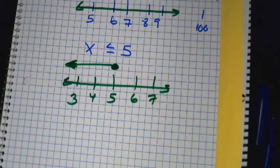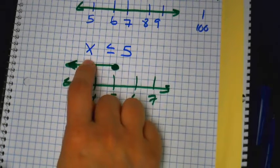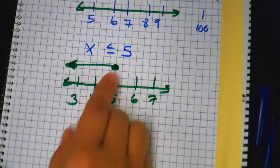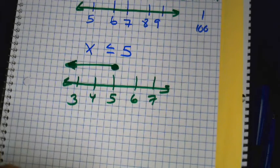Your graph is your answer, because I'm looking for a number that's less than or equal to 5. Can you list all the numbers that are less than or equal to 5? No — so you graph it.